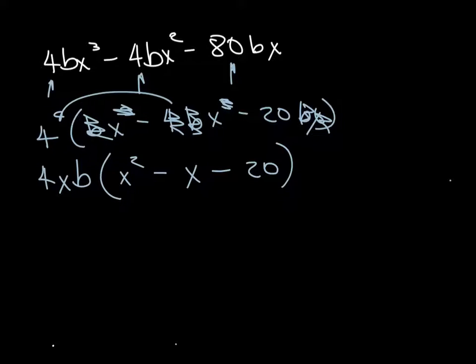So probably the thing that's confusing that I didn't do is this 4 that was right there. I pulled the 4 out, and then I rewrote it there. I shouldn't have done that, it should have been bx cubed minus bx squared minus 20bx. And I left that 4 in, sorry about that. So now that 4xb, it's always going to be part of our answer. So now we're going to factor this.